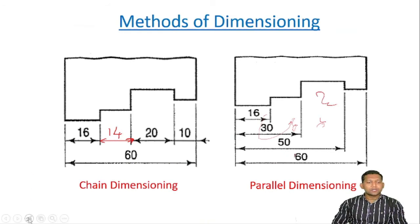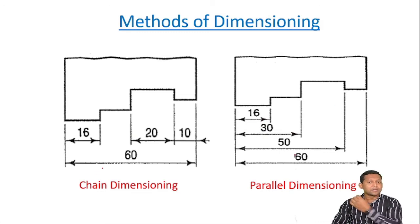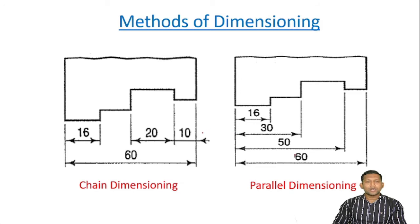This figure talks about the sub-types of dimensioning — the main two types. This is the right way of using the unidirectional system. So, the aligned system and unidirectional system are the two main dimensioning methods.